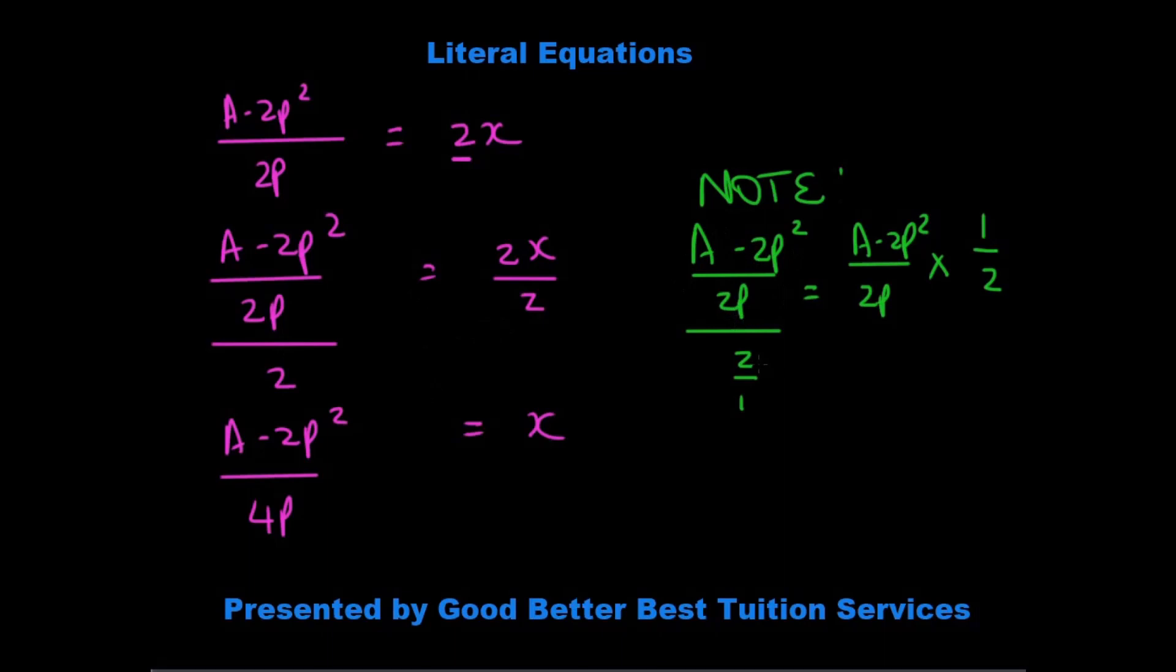So what I want you to pay special attention to is that when I say a minus 2p squared over 2p divided by 2 over 1, it's the same thing as a minus 2p squared over 2p times 1 over 2. And if you remember how we do fractions, it's numerator times numerator, denominator times denominator.